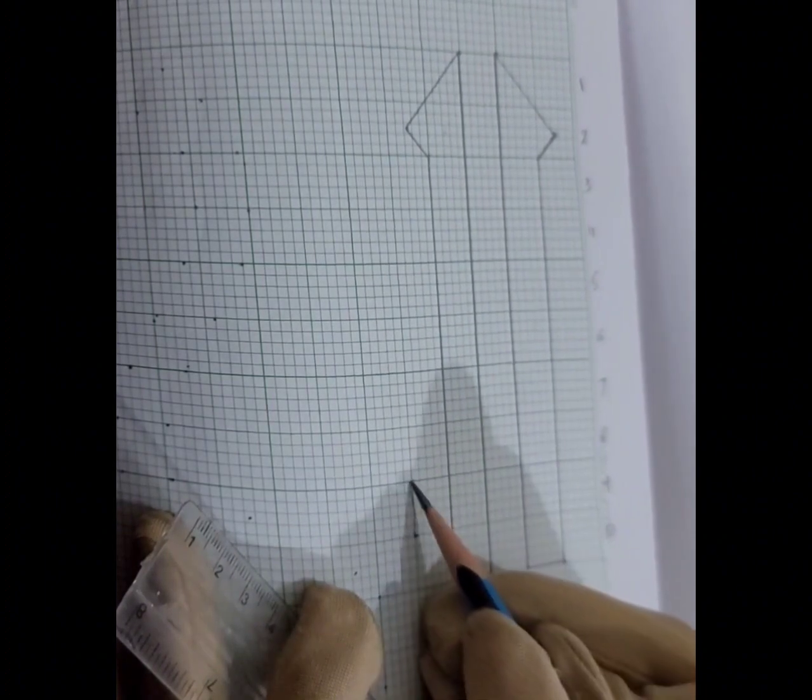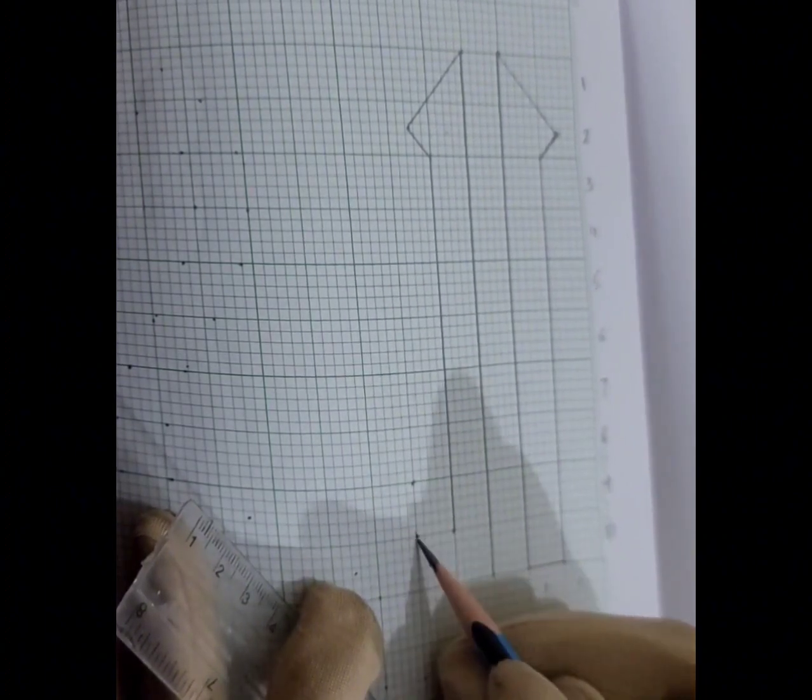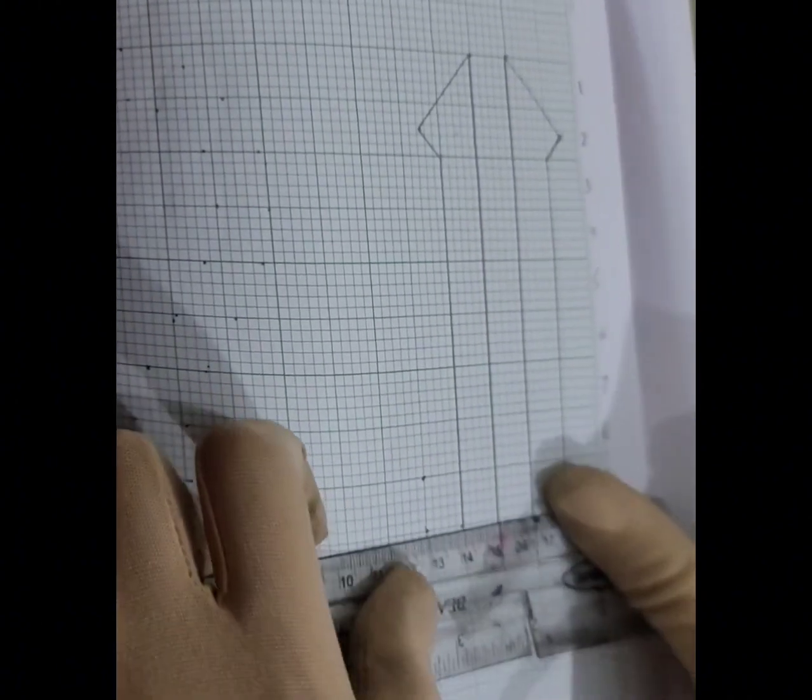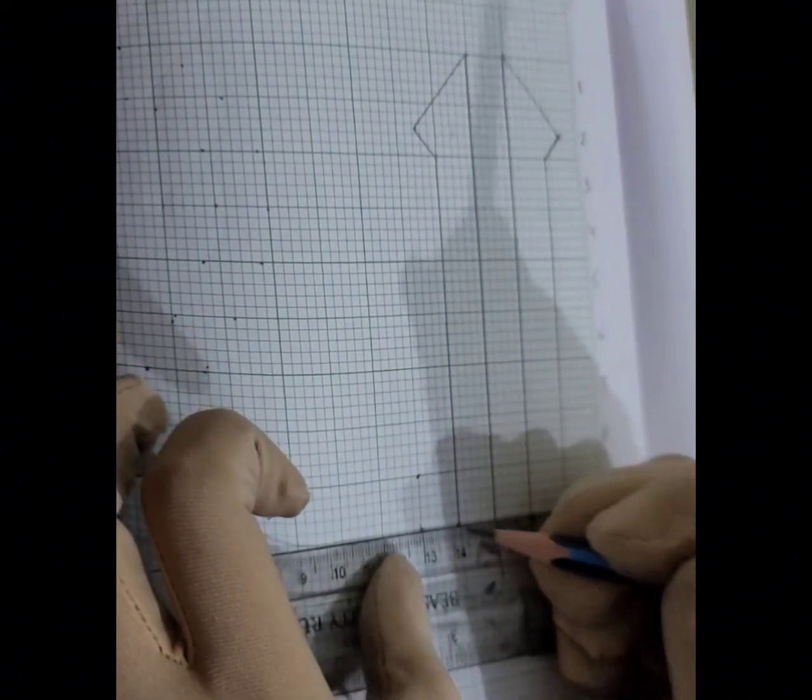Then there's another one spot. We put a line here. Now we have a line here. We put a line here.